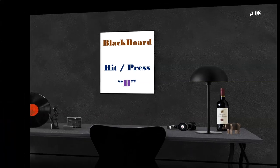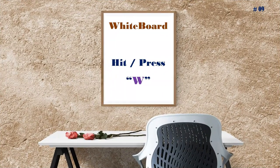The next shortcut is the Whiteboard. Previously we discussed the blackboard using the B key. Now, to change the PowerPoint presentation to a white screen or whiteboard, press the W key during the presentation. The whiteboard will appear automatically. So B is the shortcut for blackboard and W is the shortcut for whiteboard.